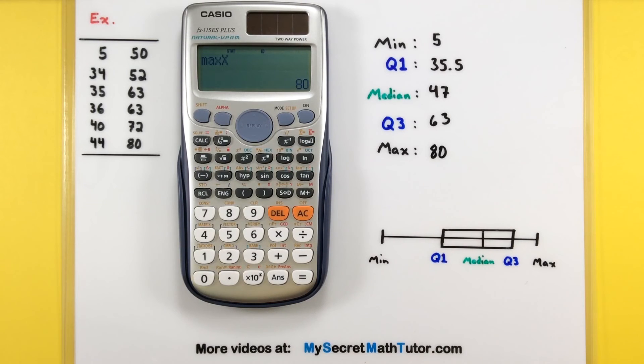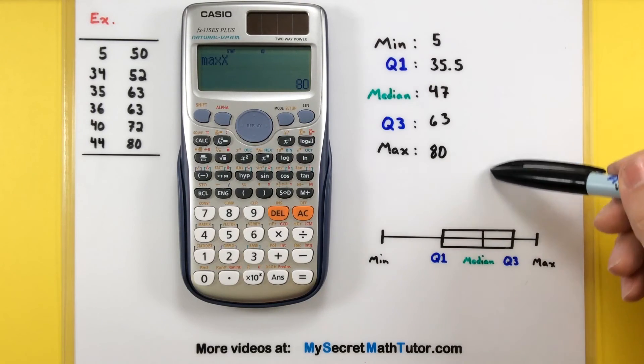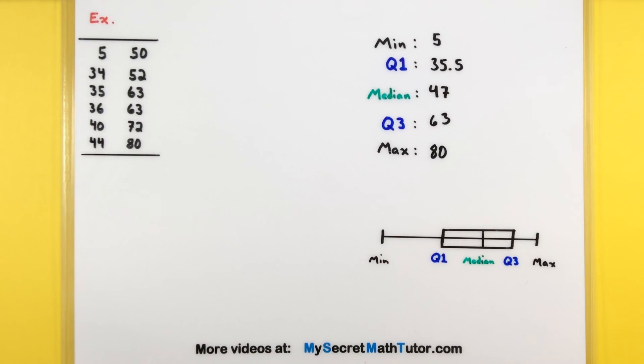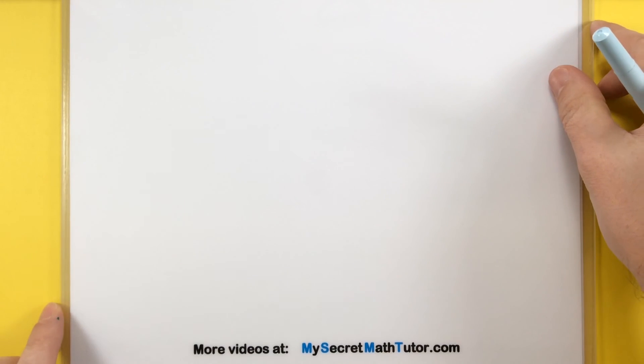So just like that, you have all the five numbers for your five-number summary. Of course, these correspond to the minimum, first quartile, the median, third quartile, and the maximum. So if you're making something like a box plot. If you'd like to see some more videos, please visit MySecretMathTutor.com.